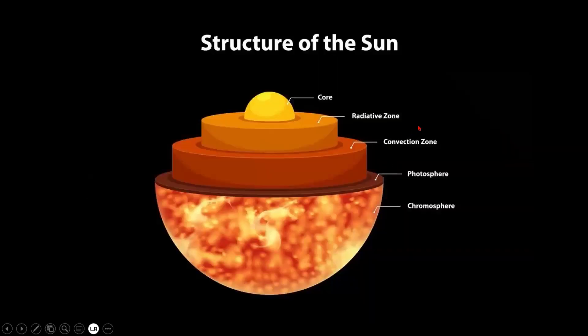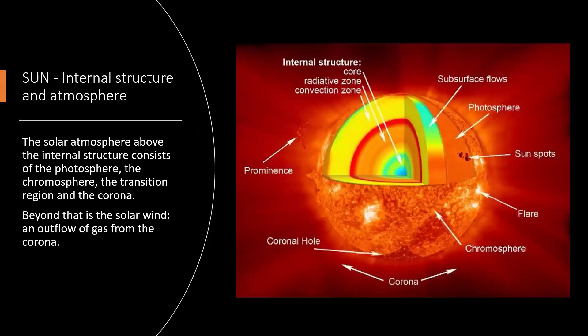We're going to go through this. We have the inside core, then we have the radiative zone, then we have the convection zone, then there's a photosphere, and there's a chromosphere. The solar atmosphere above the internal structure consists of the photosphere, the chromosphere, the transition region, and the corona. Beyond that is the solar wind, which is an outflow of gas from the corona.